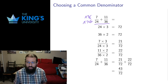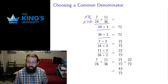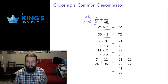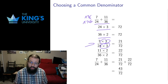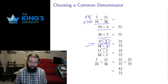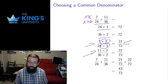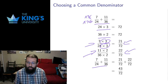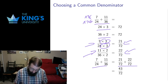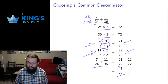I'll give an example where I choose a smaller denominator than twenty-four times thirty-six. I can notice that twenty-four times three and thirty-six times two are both seventy-two. So I multiply the first fraction by three, top and bottom, and the second fraction by two, top and bottom — multiplying by the same thing top and bottom doesn't change the fraction. That gives three times seven equals twenty-one over seventy-two, and two times eleven equals twenty-two over seventy-two. Then seven twenty-fourths plus eleven thirty-sixths equals twenty-one seventy-seconds plus twenty-two seventy-seconds, which is forty-three seventy-seconds. That's an example of choosing a smaller common denominator using the least common multiple.